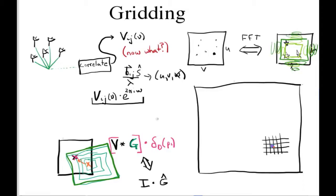And also, by knowing precisely what your gridding function here is, you can potentially just divide it back out of your final image.